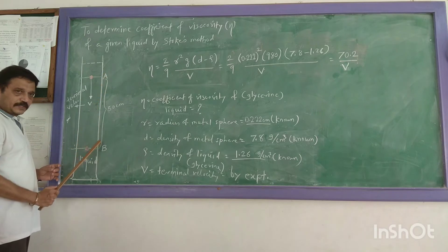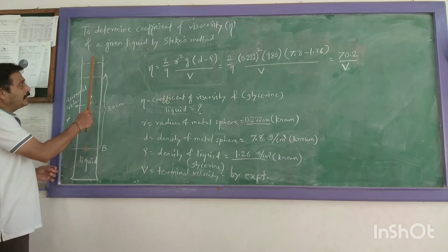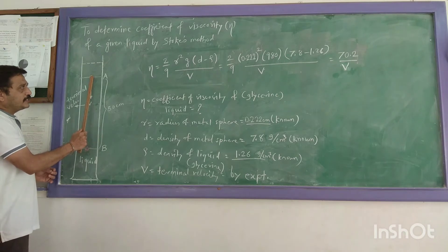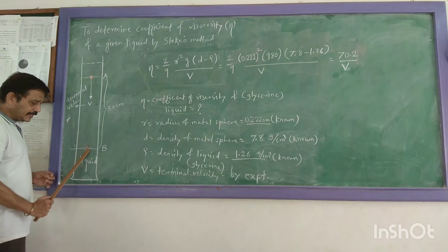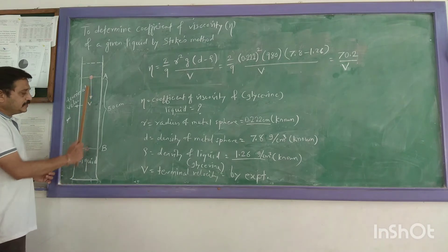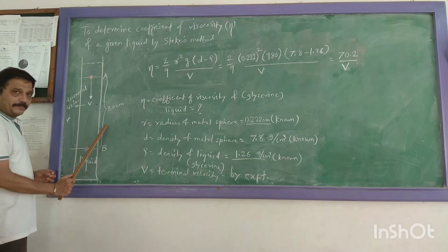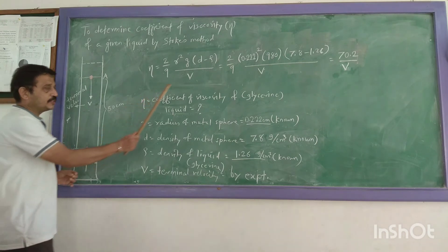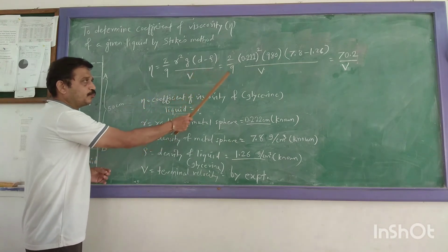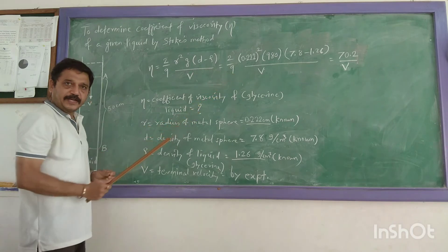Now, this distance is known to us. What to do? Very simple. Allow the metal sphere to fall through the liquid. As the metal sphere crosses marking A, start the stopwatch. At the moment it crosses marking B, stop it. And using distance divided by time, that gives me velocity. And that velocity we are going to put here.